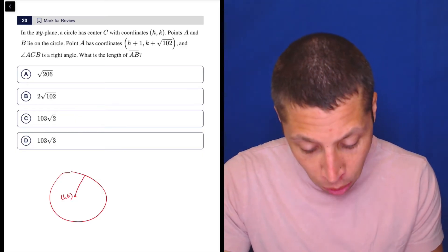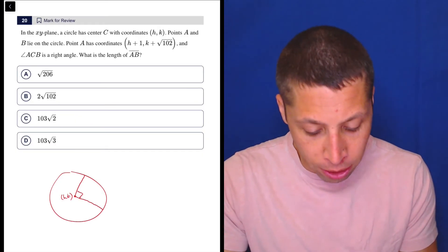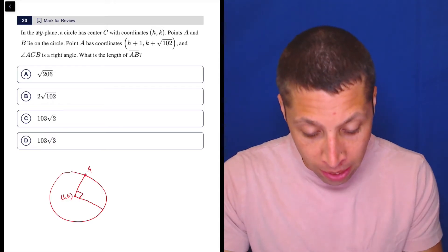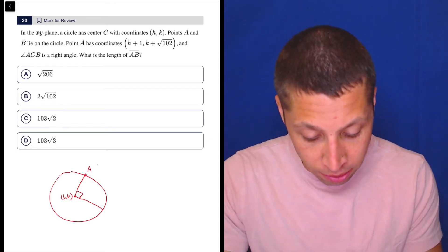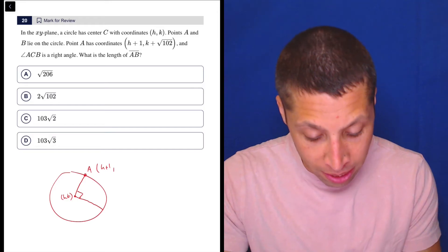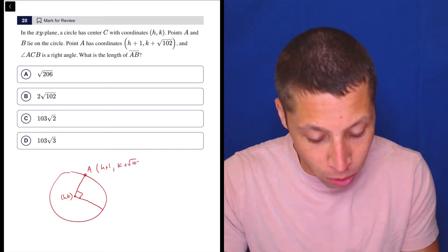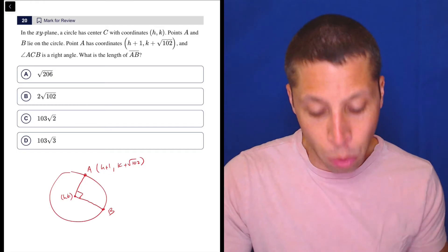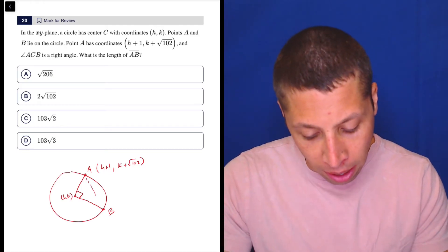So I have no idea where those points are, I'm just going to draw a right angle. And here's a, and that's h plus 1, so h plus 1, k plus radical 102. And here's b, but we don't have anything about those coordinates, and we need to find the length of AB.